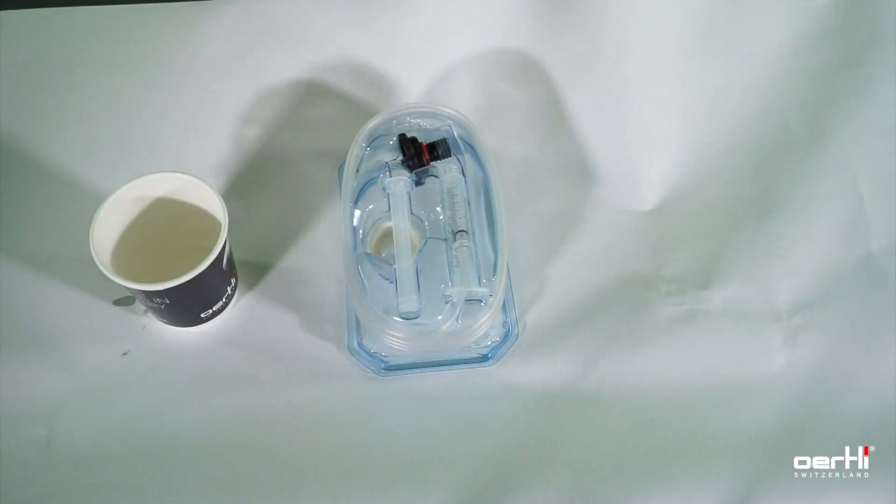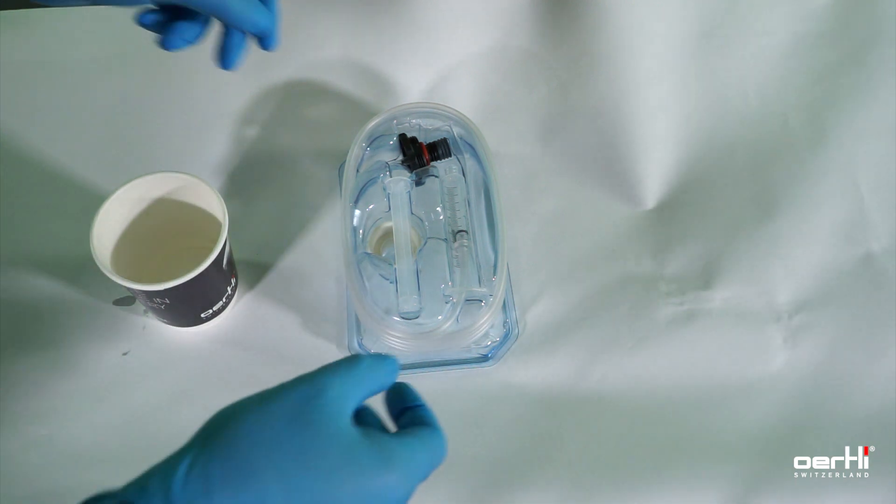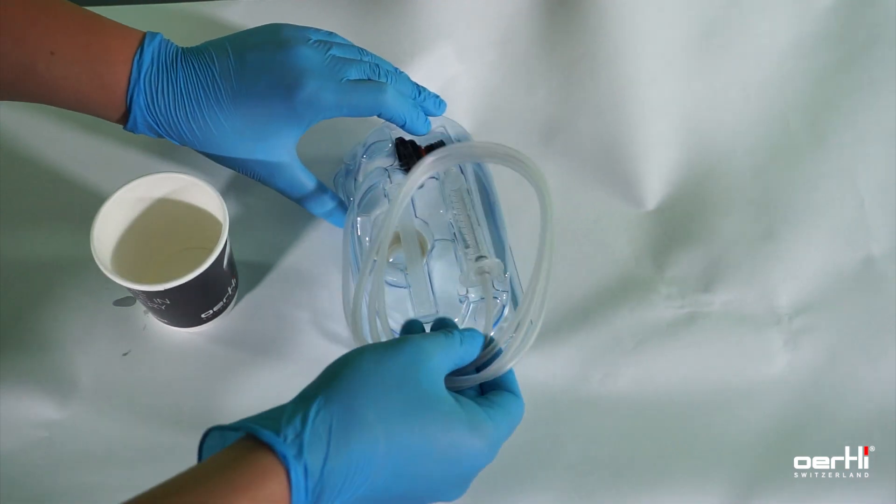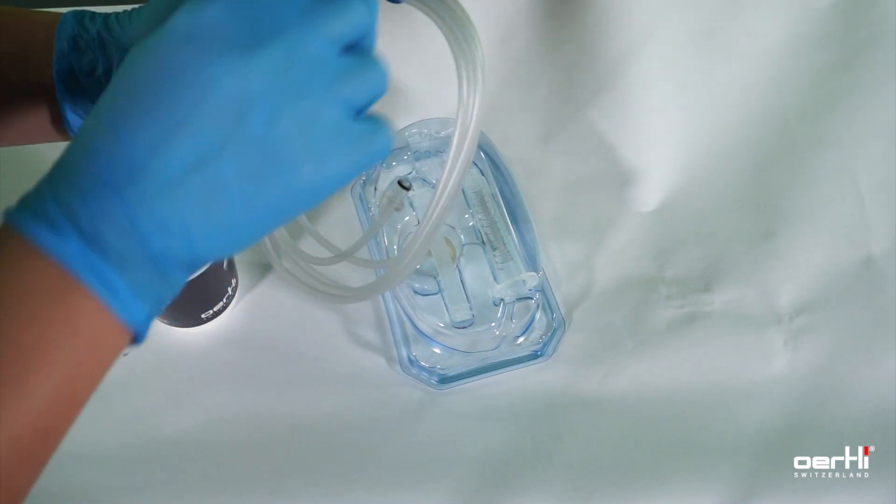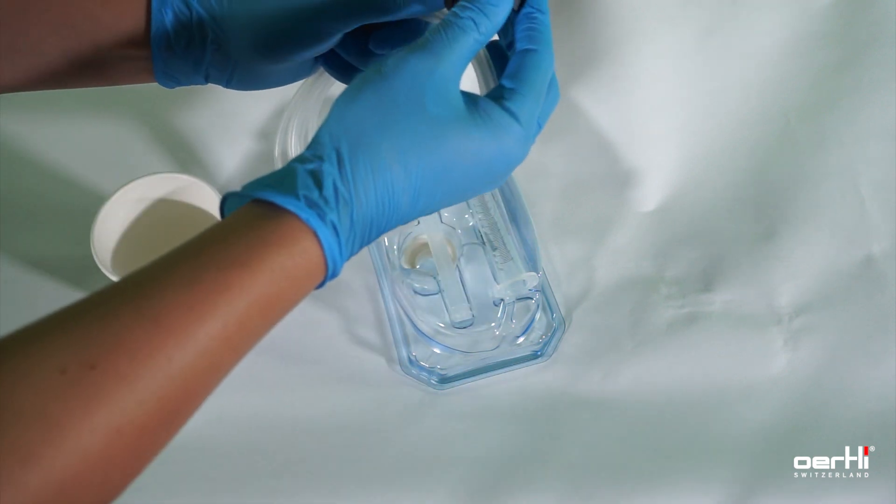The silicon oil application set comes in the shown condition. It includes a tubing with the black syringe adapter which already contains the plunger stopper.